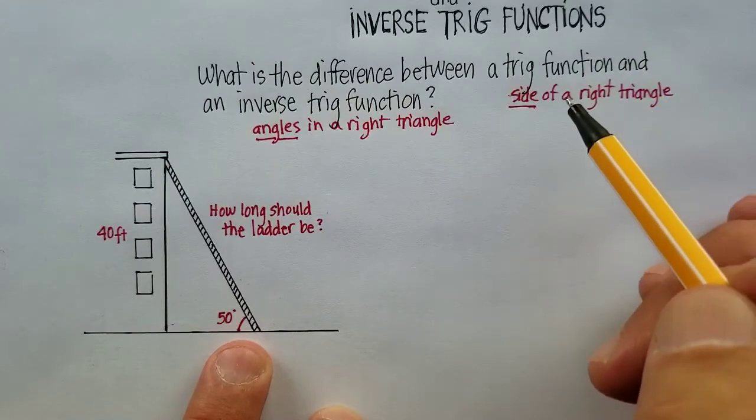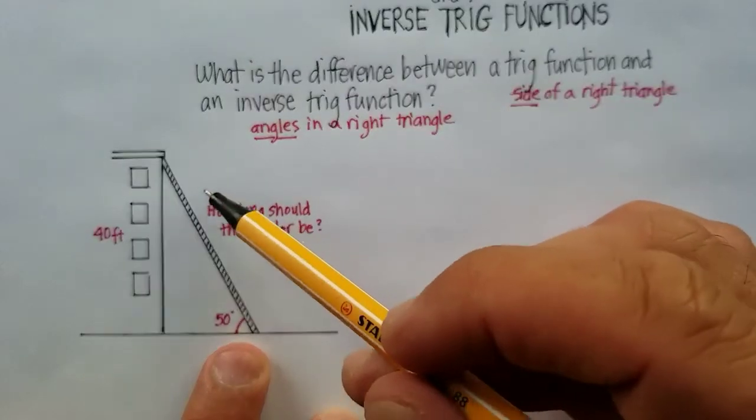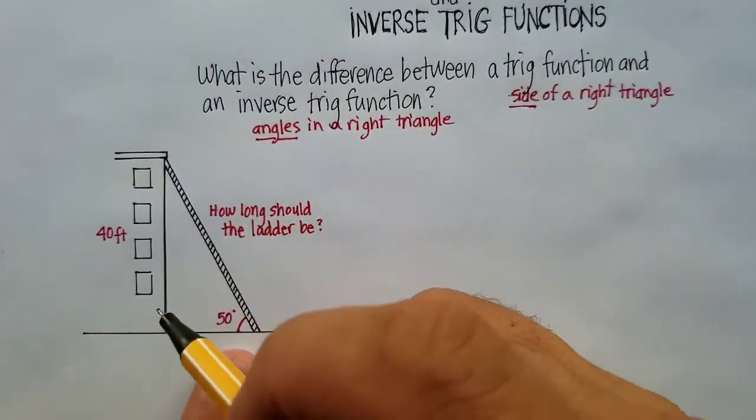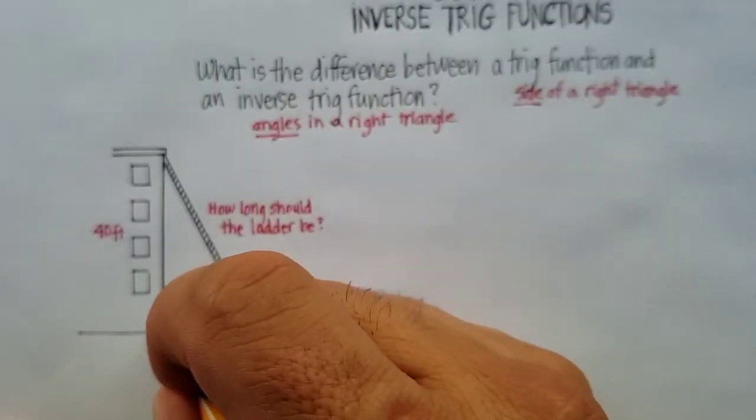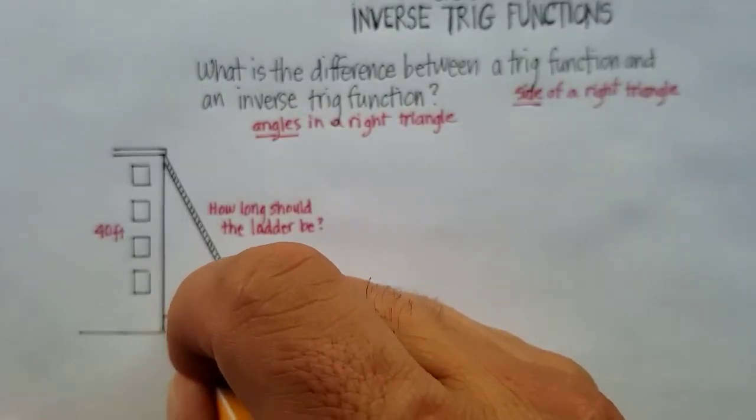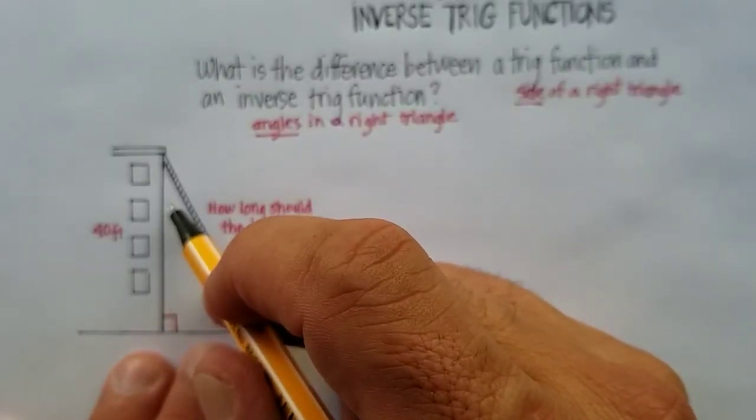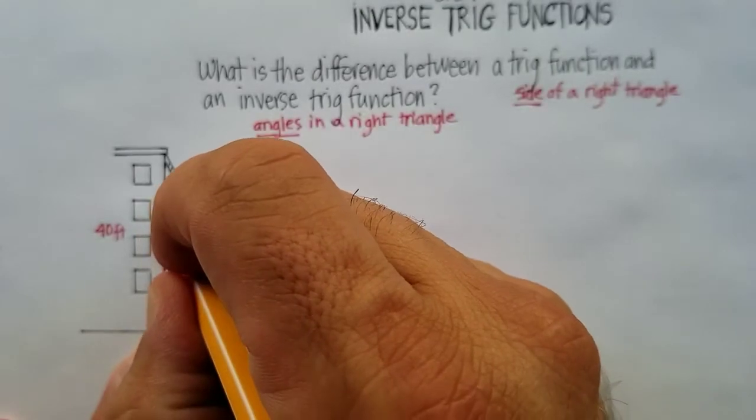Well, remember that trig functions find the sides, and this is basically a side of a right triangle. Matter of fact, it's the hypotenuse of a right triangle. We happen to know that this is 90 degrees, right? And if that's 50, we already know that this is 40 degrees. So we can just fill that in.